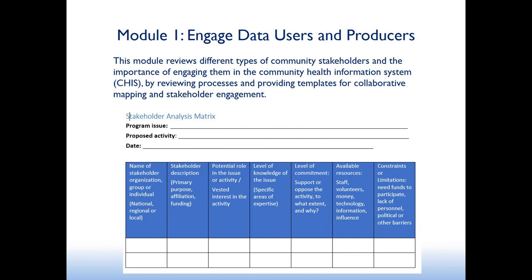Module one, about engaging data users and producers, reviews different types of community stakeholders and the importance of engaging them in the community health information system — providing templates for collaborative mapping and stakeholder engagement. The main idea is to identify key actors, why it's important to engage them, and to conduct a mapping and analysis of stakeholders. There's an analysis matrix in the annex with a table listing stakeholder names, descriptions, potential roles, level of knowledge and commitment, and resources and constraints — along with an engagement plan.